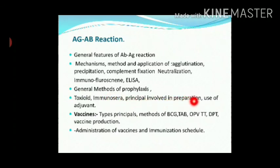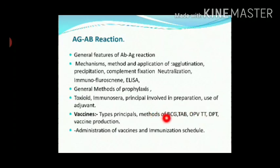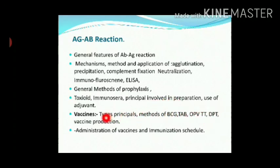Principle involved in preparation and use of adjuvant. Then vaccines — types of principle, method. Number of vaccines and the immunization schedule. This includes BCG (Bacillus Calmette-Guérin), OPV (oral polio vaccine), TTI, DPT — different vaccine types. We will study these later on, including administration of vaccine and the immunization schedule.